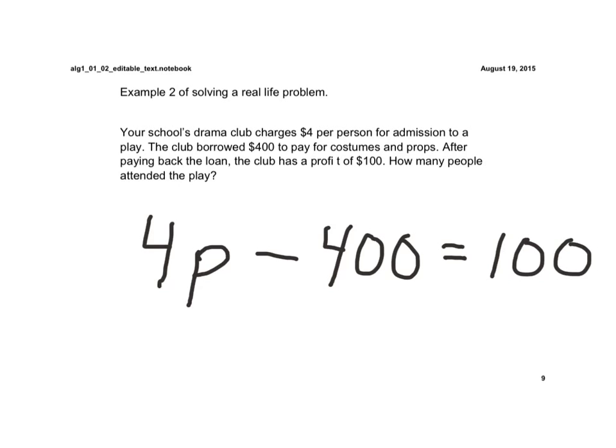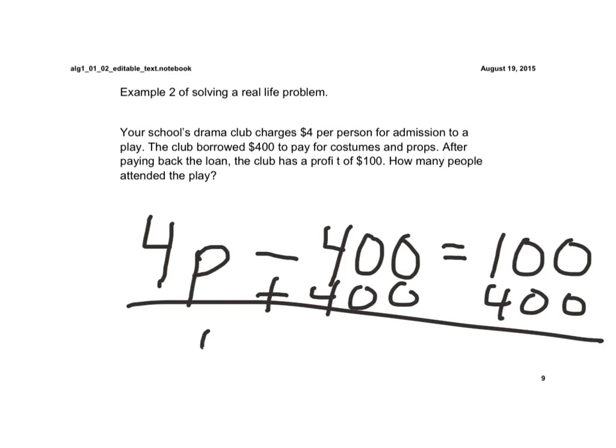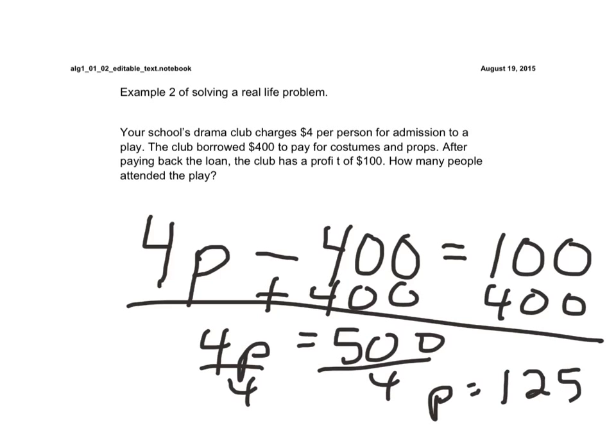So, there's no simplifying that needs to be done here. We're just ready to solve a two-step equation. We're going to add 400 to both sides. We get 4P is equal to 500. Now, we're going to divide both sides by 4, and we would get P to be 125 people.